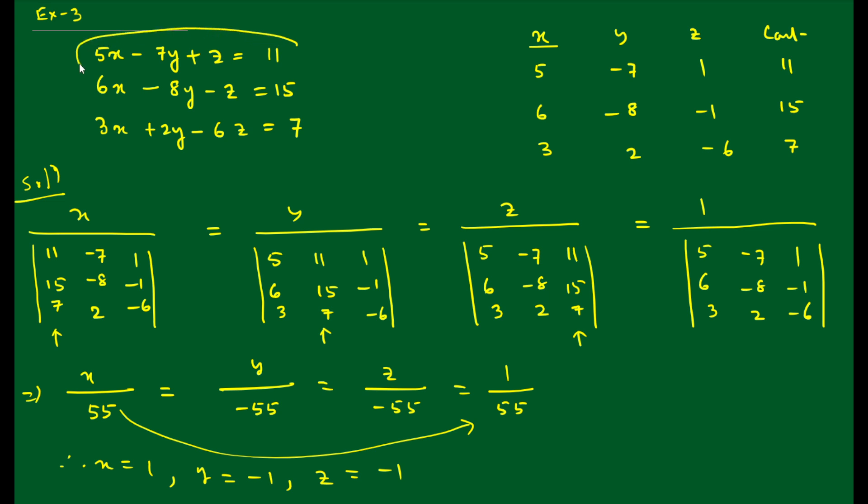Let us put these values in this particular equation to verify. 5x minus 7y plus z: 5 times 1 minus 7 times (-1) plus (-1) equals 5 plus 7 minus 1 which is 11. I think you understand what is Cramer's rule. It is very easy, provided you can find the determinant within a very short time. If you can break a determinant in 10 to 15 seconds, you can get the values of x, y and z quickly.